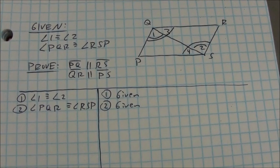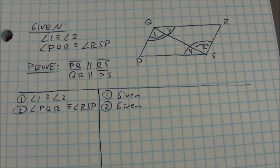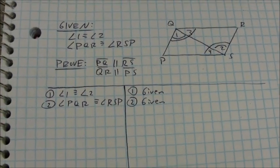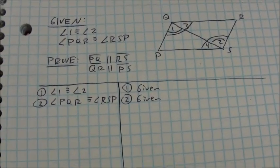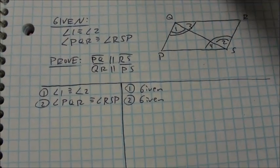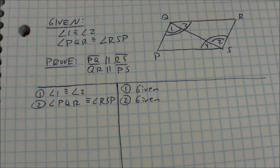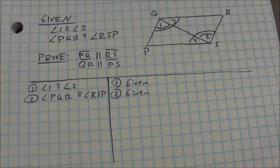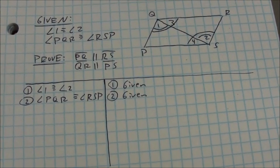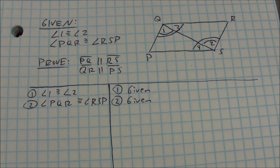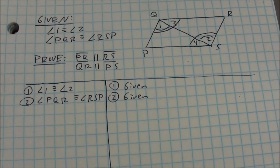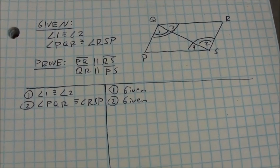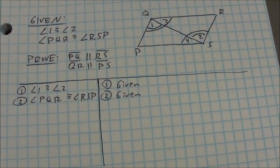I've simplified this proof just for the demonstration, but that's typically what you're going to be showing. If you're going to prove lines parallel, you need to look for special angle relationships, such as congruent alternate interior angles, congruent corresponding angles, or congruent alternate exterior angles.